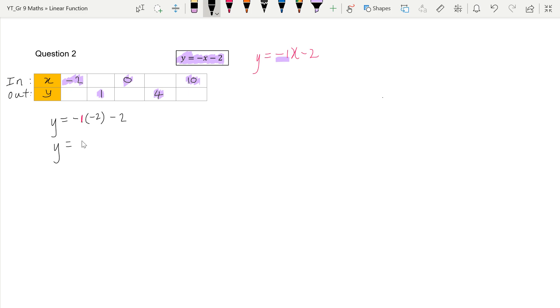So that will give us a positive 2, and I take away 2. So that will be 0. When my x is negative 2, my y will be 0. And that is the coordinate that we can go plot on the Cartesian plane.